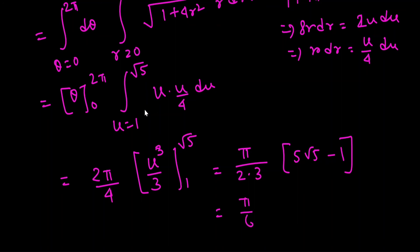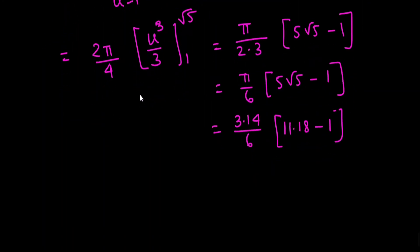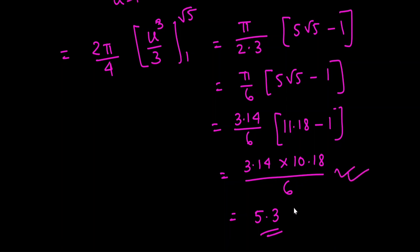Numerically, (π/6)(5√5 − 1): π ≈ 3.14, 5√5 ≈ 11.18, so 5√5 − 1 ≈ 10.18. Then 3.14 × 10.18 / 6 ≈ 5.3. So the answer is approximately 5.3. You should check the calculations to confirm.